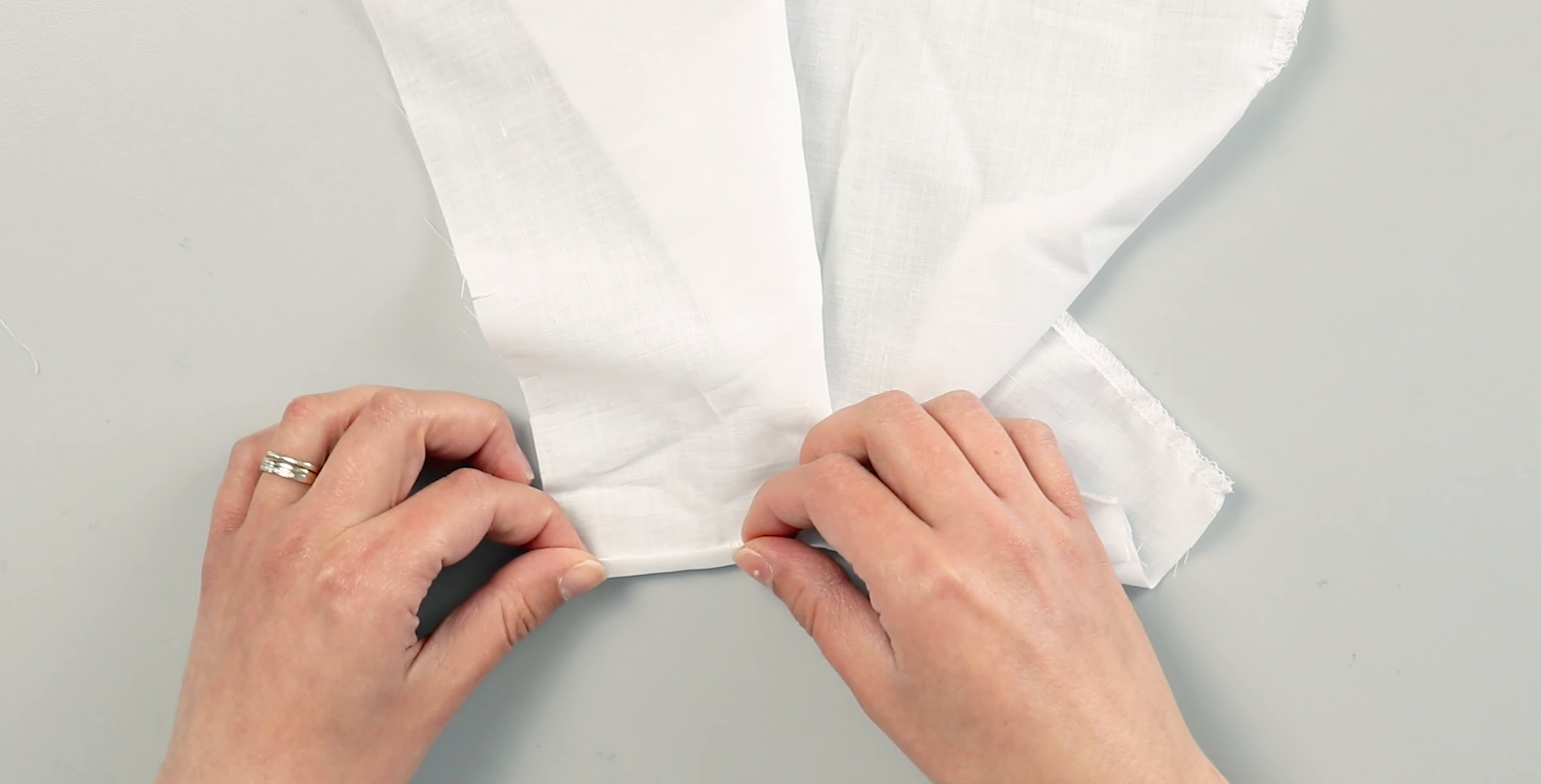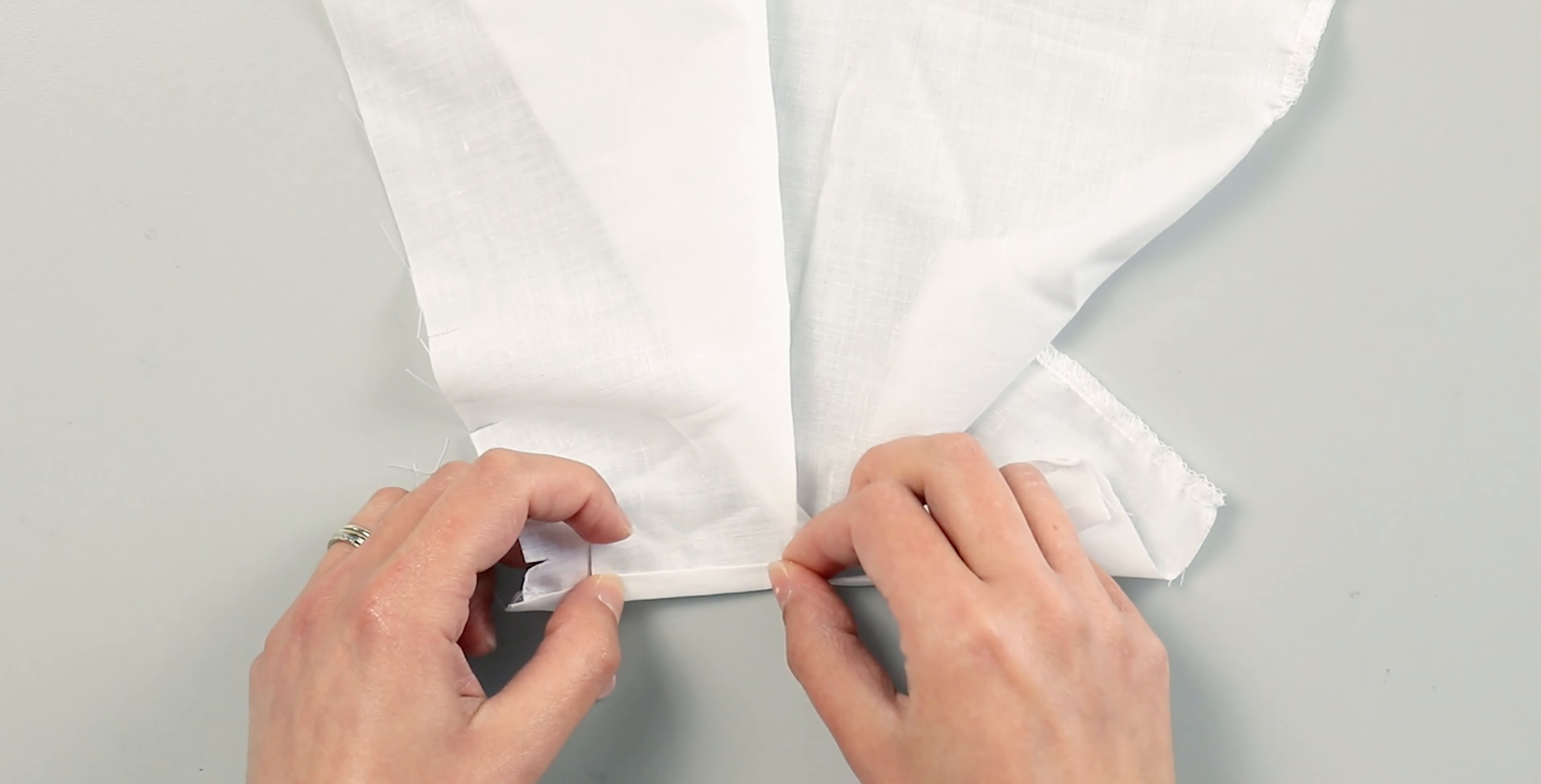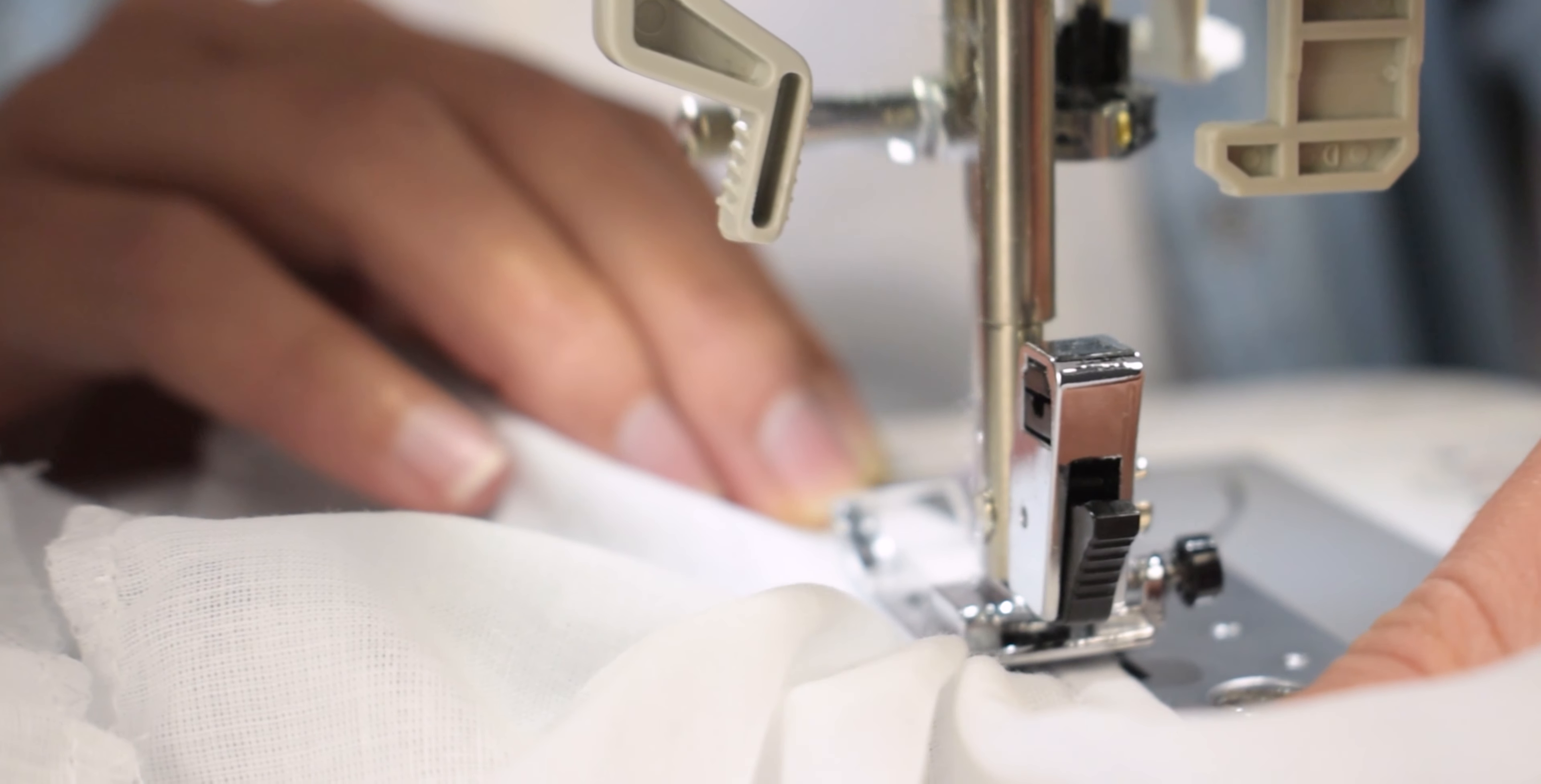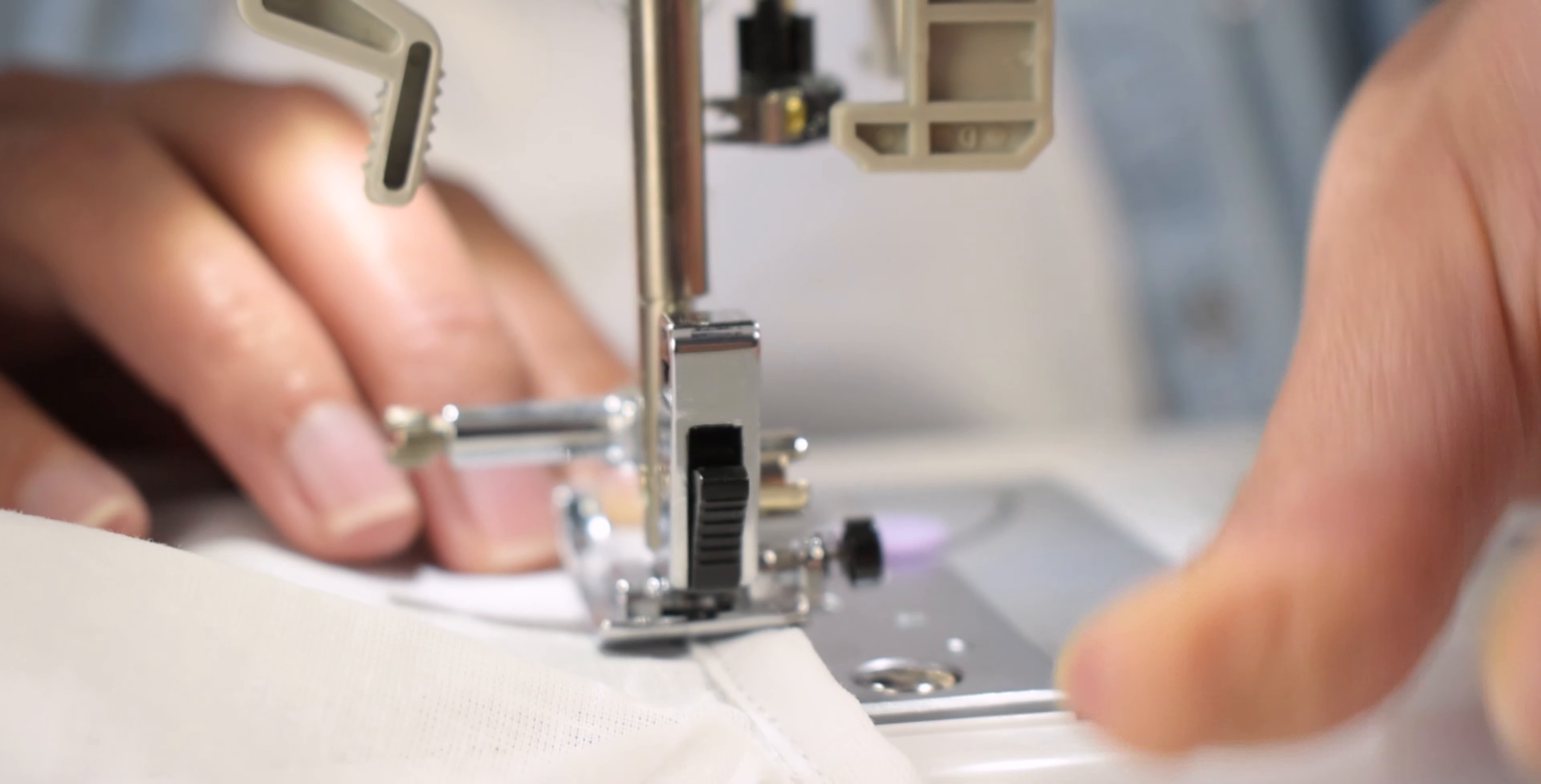Then, fold over the other side of the binding, tuck the raw edge under, pin and sew in place. Do the same for the other sleeve.